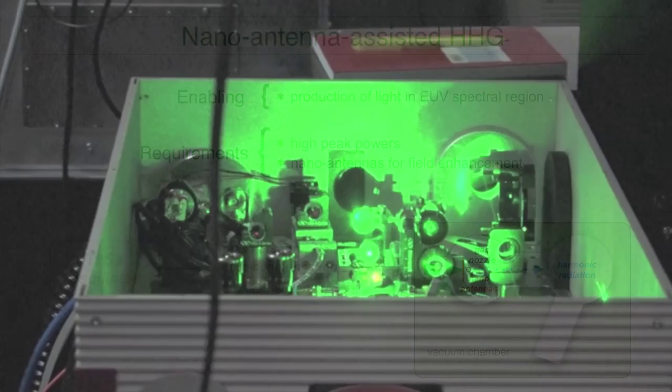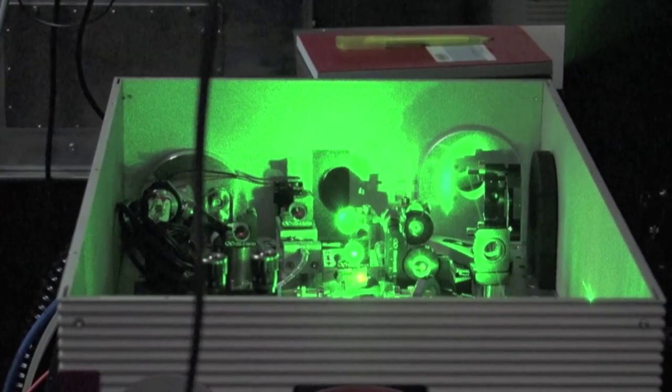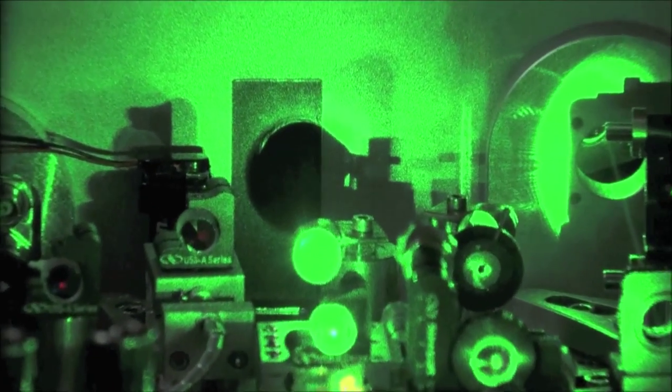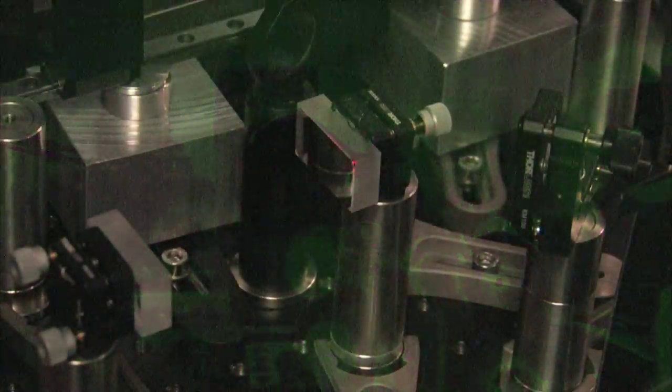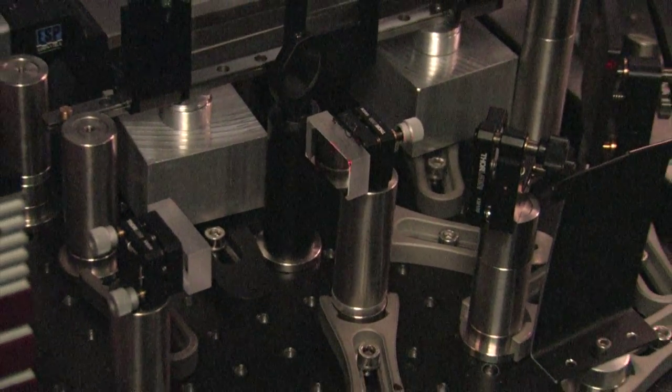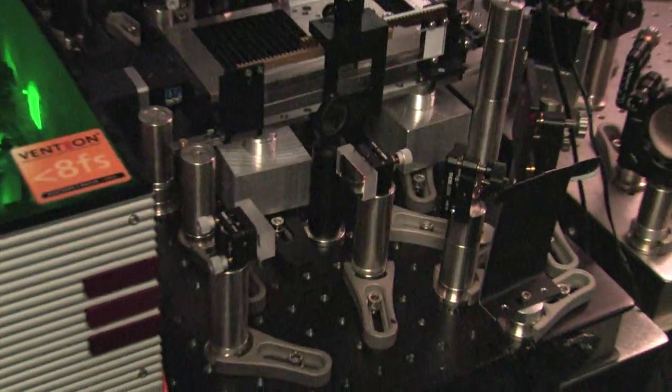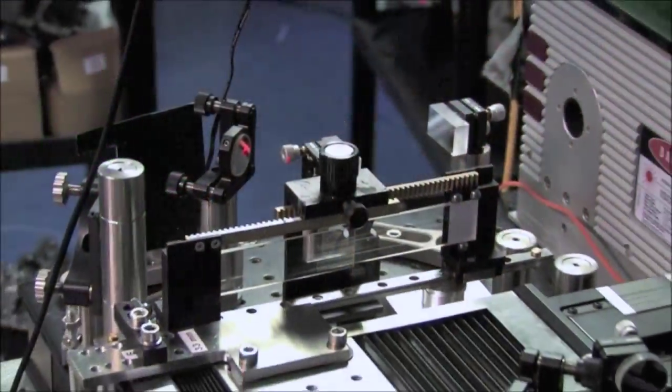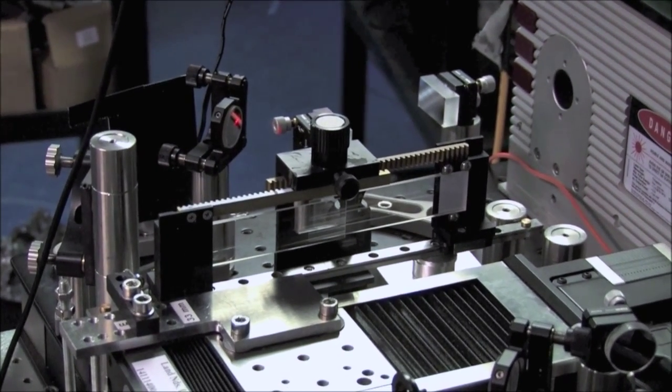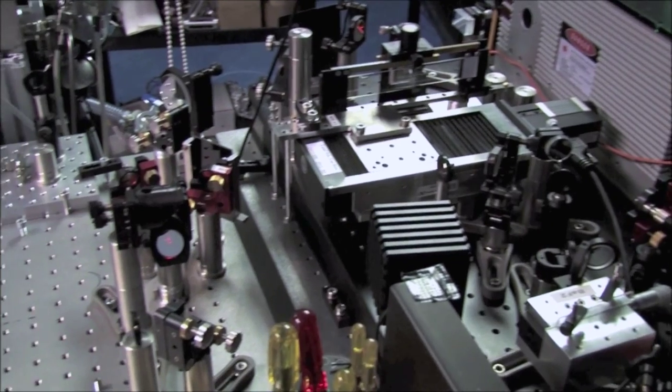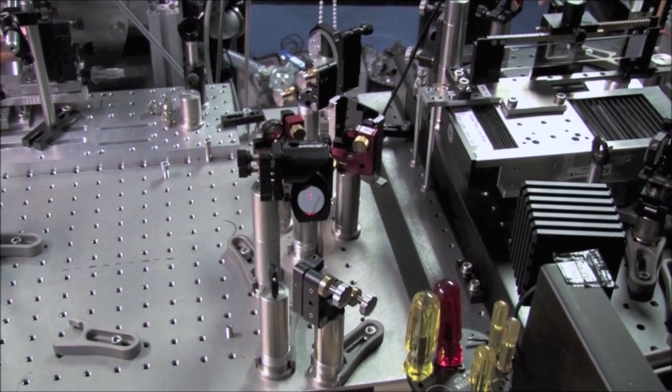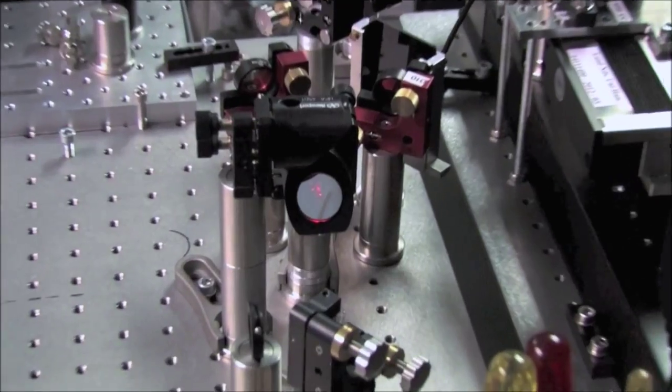The titanium sapphire oscillator in our setup works at 100 megahertz and delivers pulses with a duration smaller than six femtoseconds. To pre-compensate the dispersion of all used optical components, two double chirp mirrors and a pair of fused silica wedges are used. After the pre-compression of the laser pulses, a telescope with a ratio of 1 to 3 increases the beam size to permit stronger focusing.